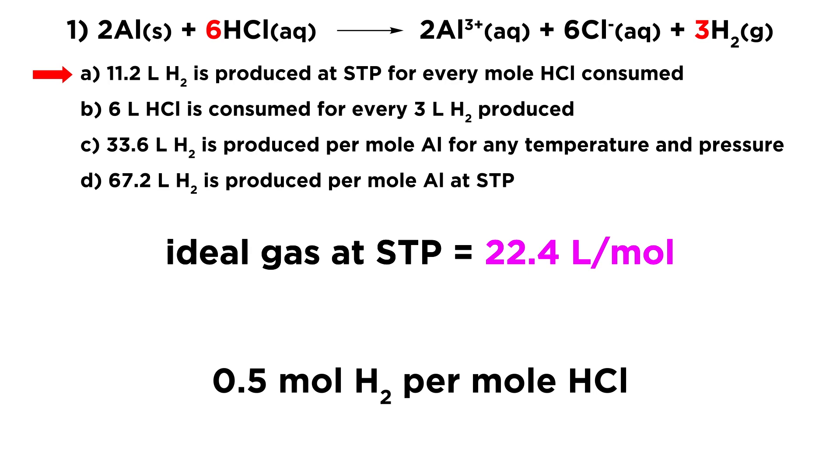If we're starting with a mole of HCl, we should get half a mole of hydrogen gas. And indeed, 11.2 liters is half of 22.4 liters. So it is true that for every mole of HCl, we will get half a mole of H2, and half a mole of H2, just as with any other ideal gas, will occupy 11.2 liters at STP. And so that actually is the answer.